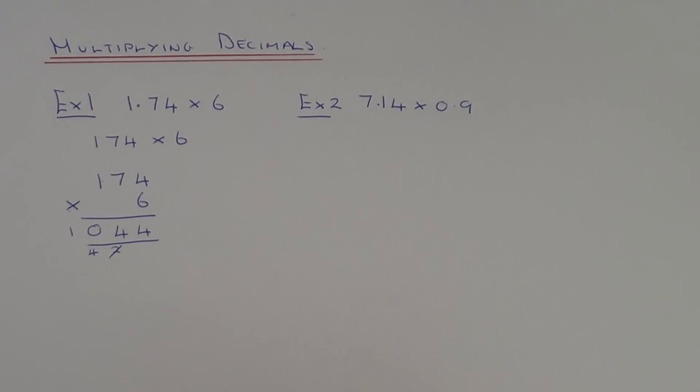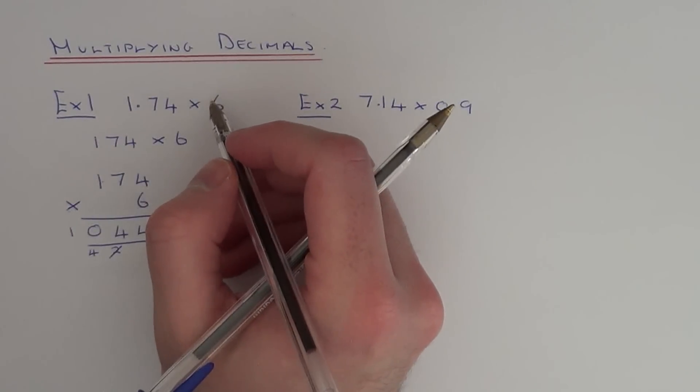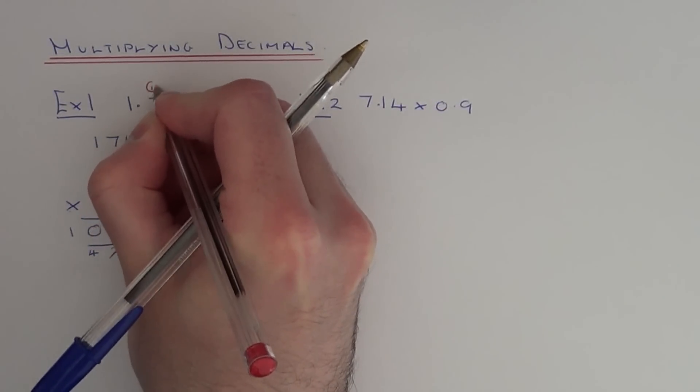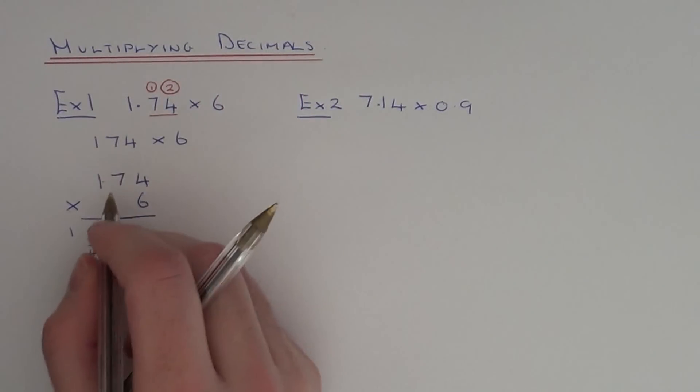So all we have to do next is put the decimal point back in to our answer. If you look back at the question, what you have to do is count the number of numbers after the decimal point in the question. We've got two numbers after the decimal point here.